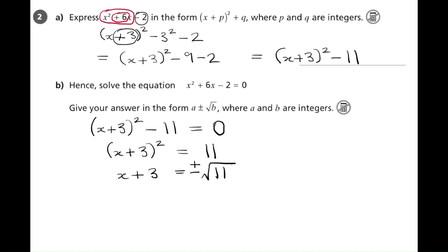So now to get x on its own, we're going to subtract 3 from both sides. We write this number at the front to make the answer look like the format that has been asked for. So we have negative 3 plus or minus root 11. And this is the answer to the question, and the a value is negative 3 and the b value is 11.